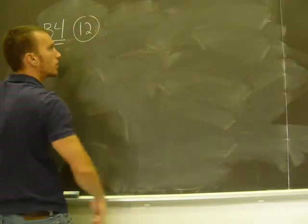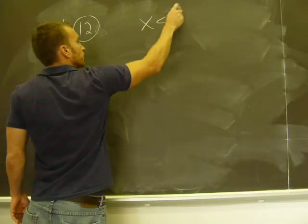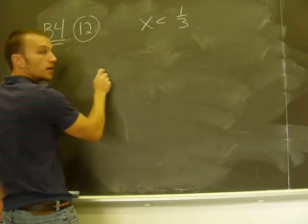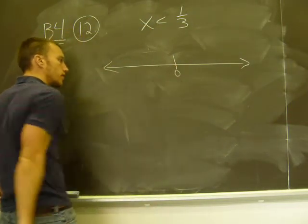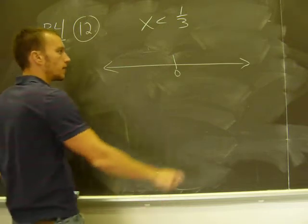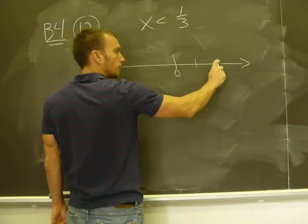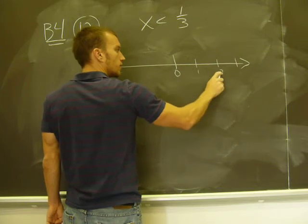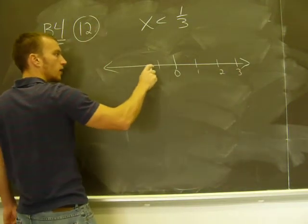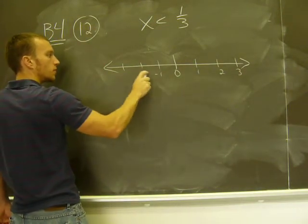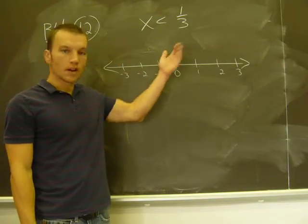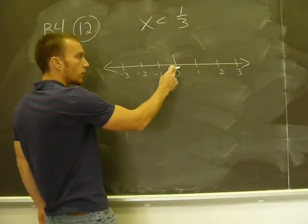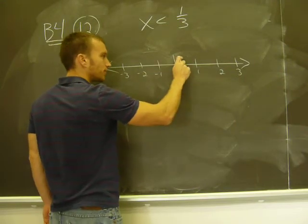x is less than 1 third is my answer. So here's my number line. There's 0, there's 1, and I'll draw a couple numbers here. There's 2, there's 3. And there's negative 1, negative 2, and negative 3. So the first thing you do is find 1 third. Where's 1 third? Well, it's a third of the way between 0 and 1, right there.